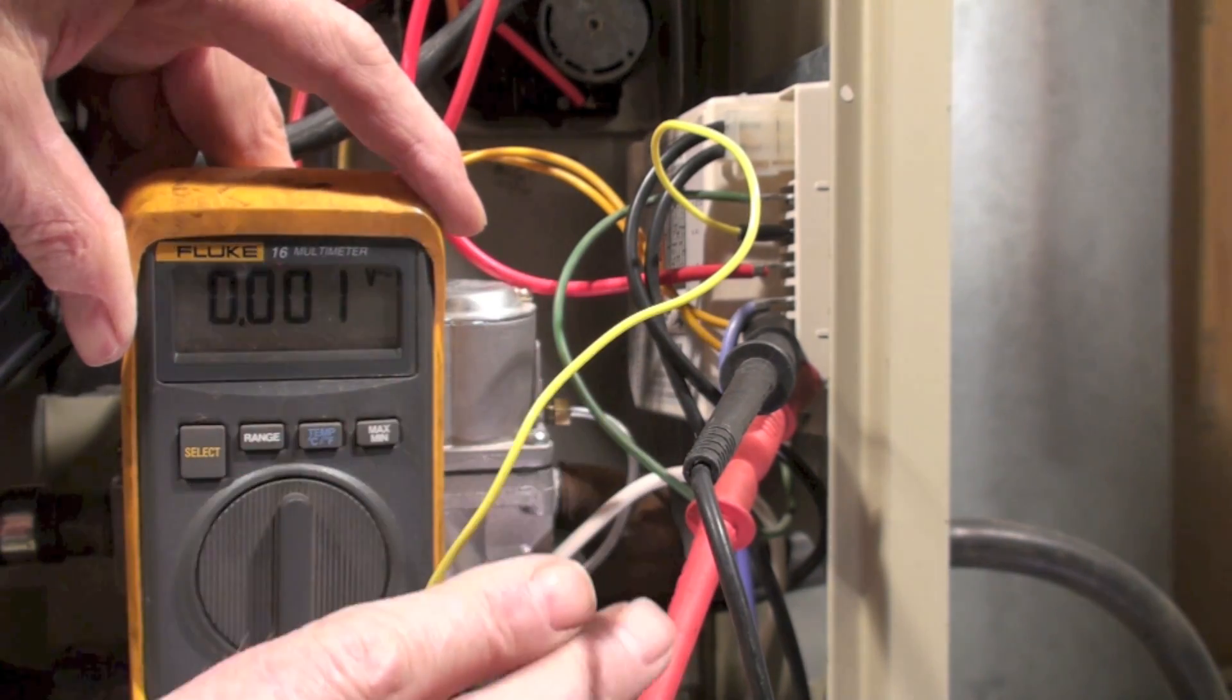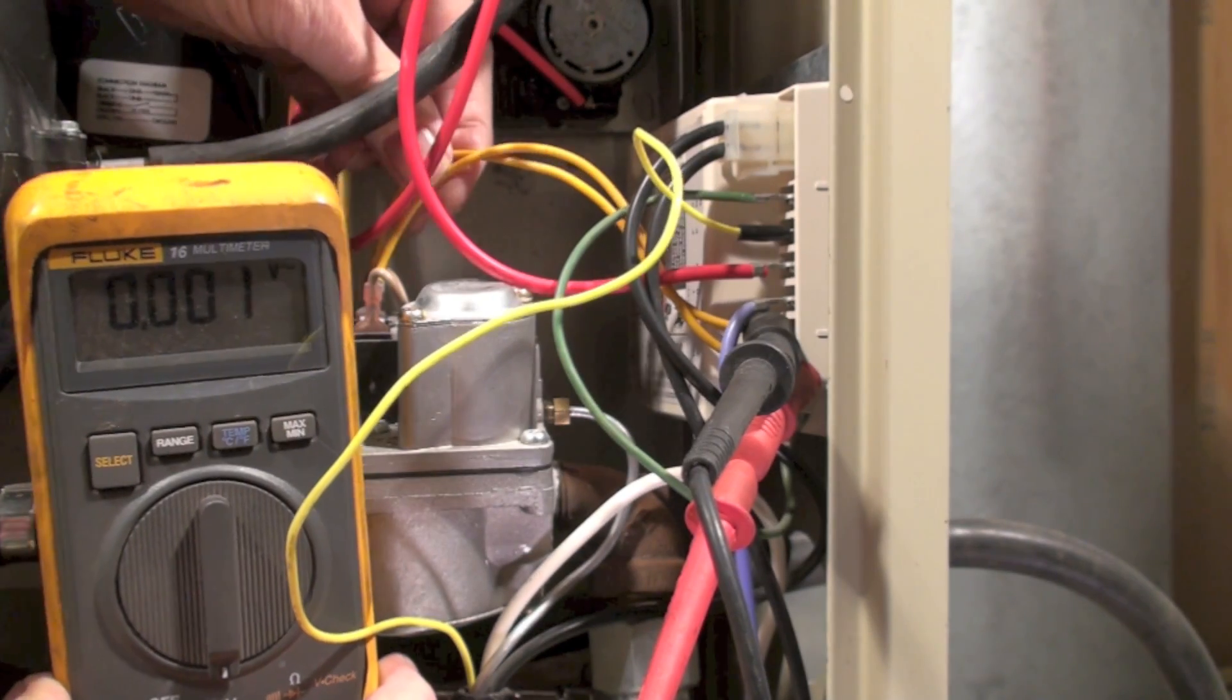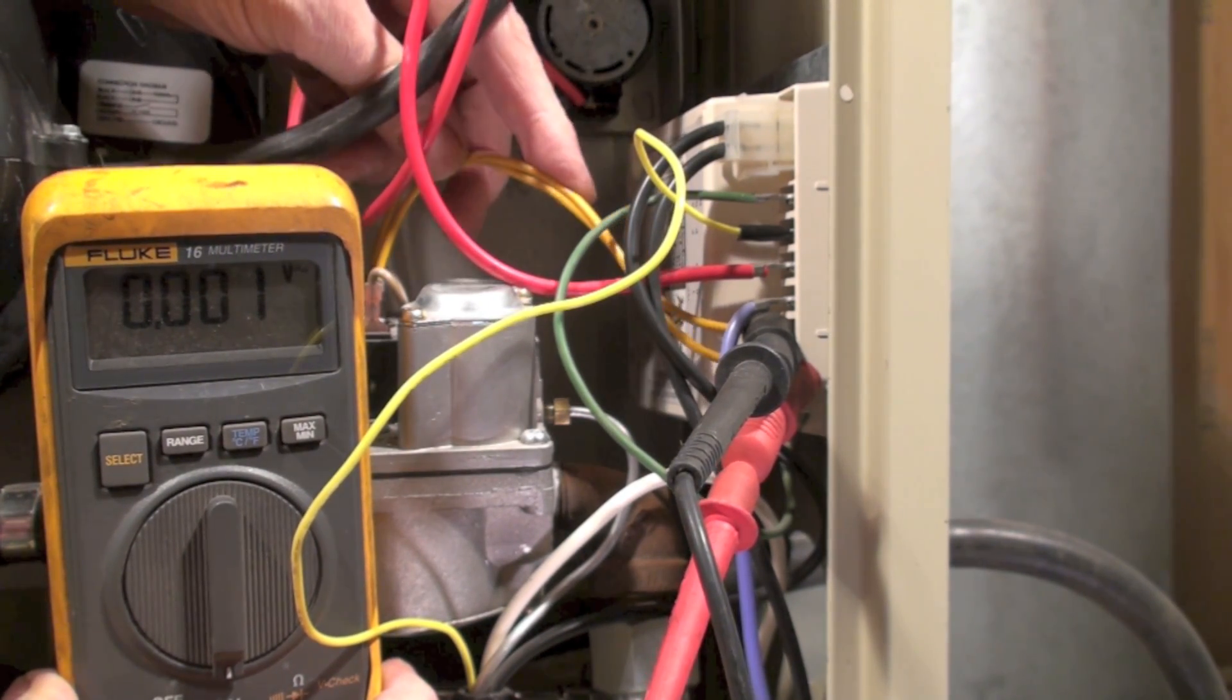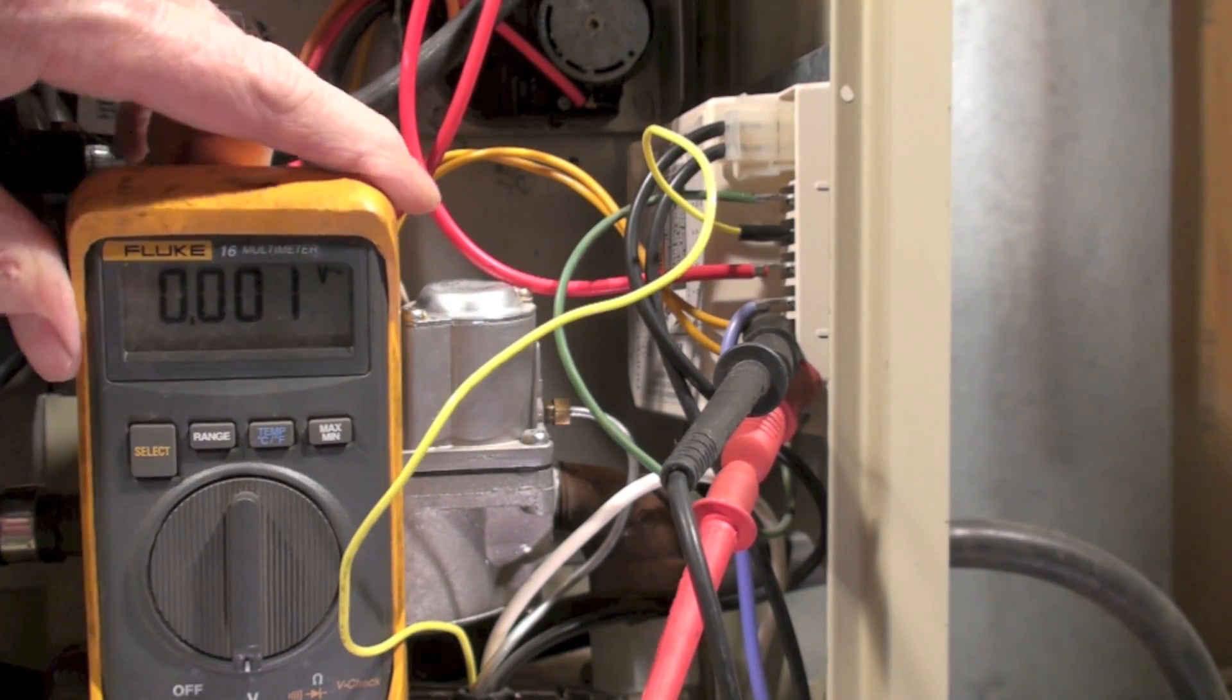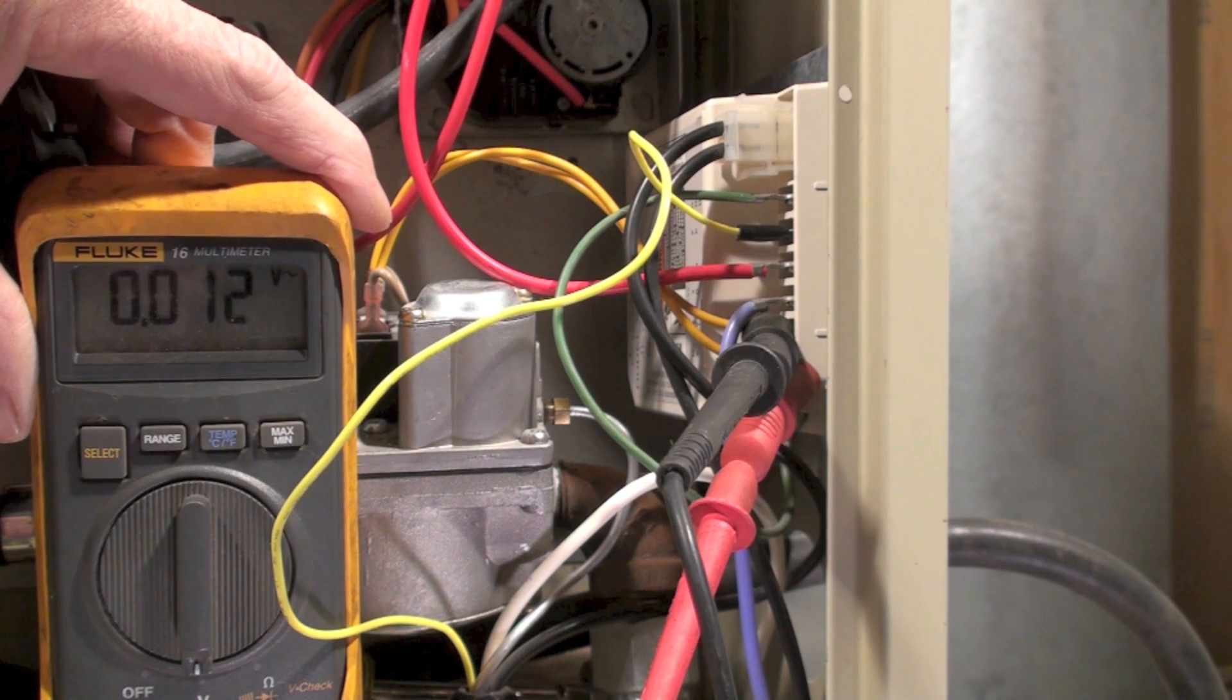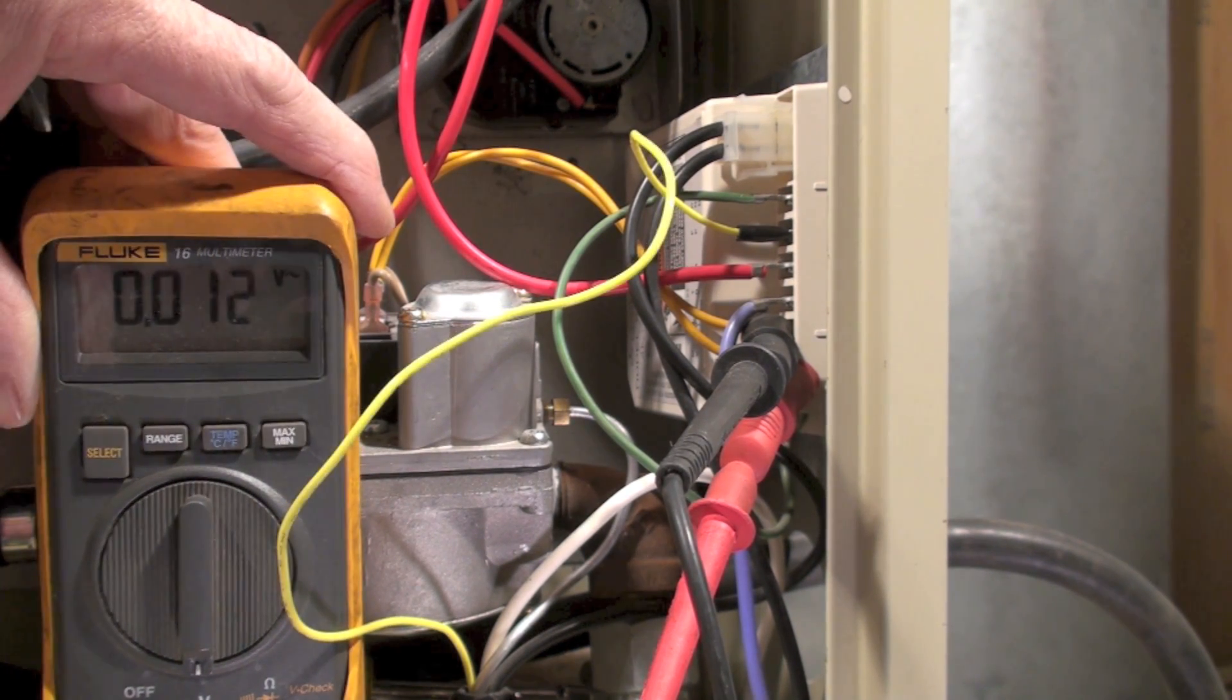I put the probes onto the gas valve terminals - that's these two yellow terminals or two yellow wires here. I could put it on the gas valve or I could put it on the ignition control. In this case, I put it on the ignition control. I'm in AC volts. I've started my inducer, inducer's come up, I've shown power coming to the board.